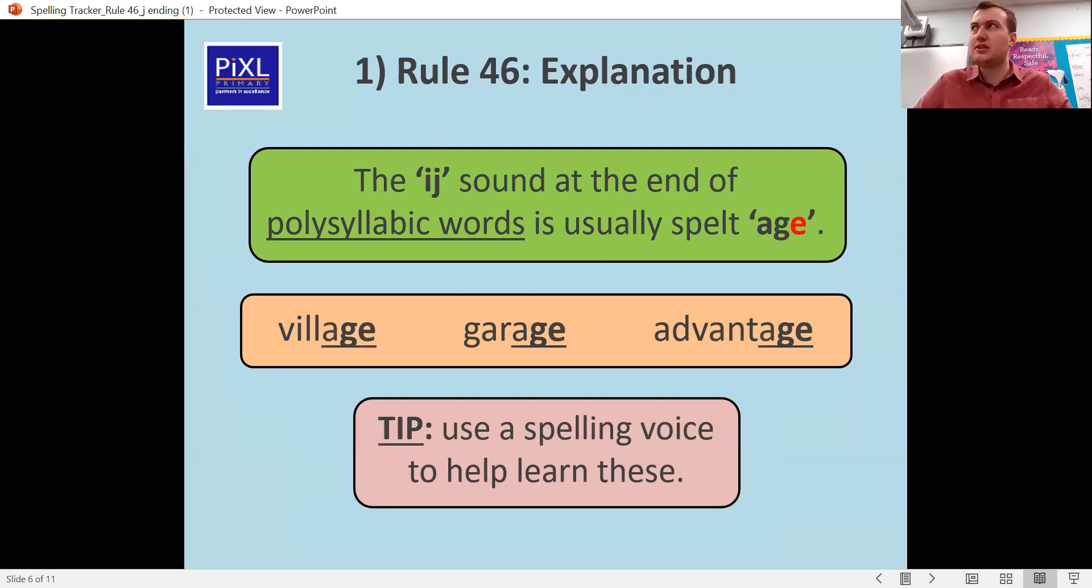Then you've got the edge sound when it's at the end. This is when there's more than one syllable in the word. So village, garage, advantage. When it's that itch sound, it's actually spelled with A-G-E. Count the syllables out on your fingers to help you.